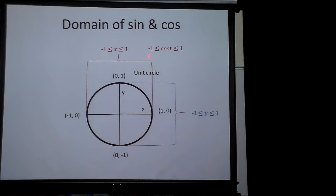So therefore, the cosine of t can only be values between negative 1 and 1, and sine of t can only be values between negative 1 and 1.